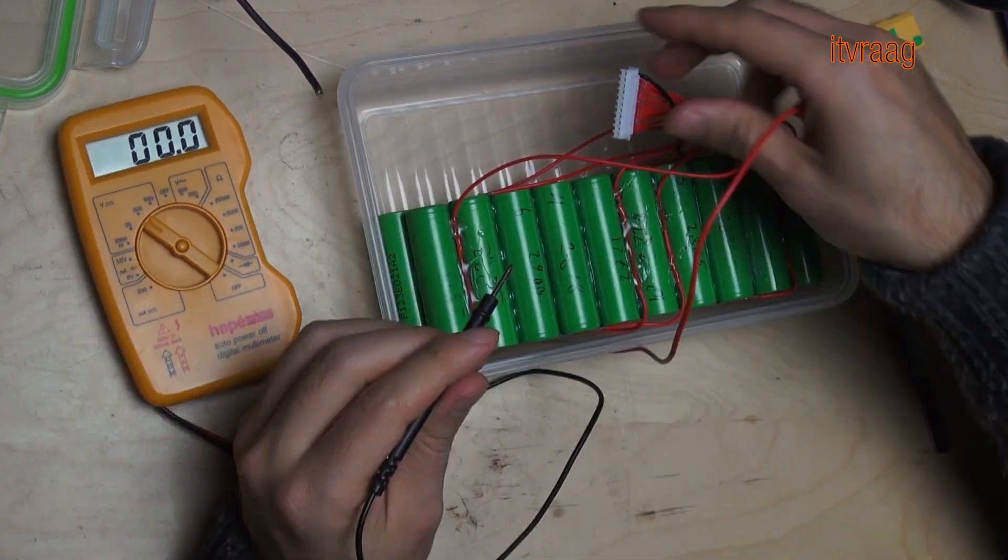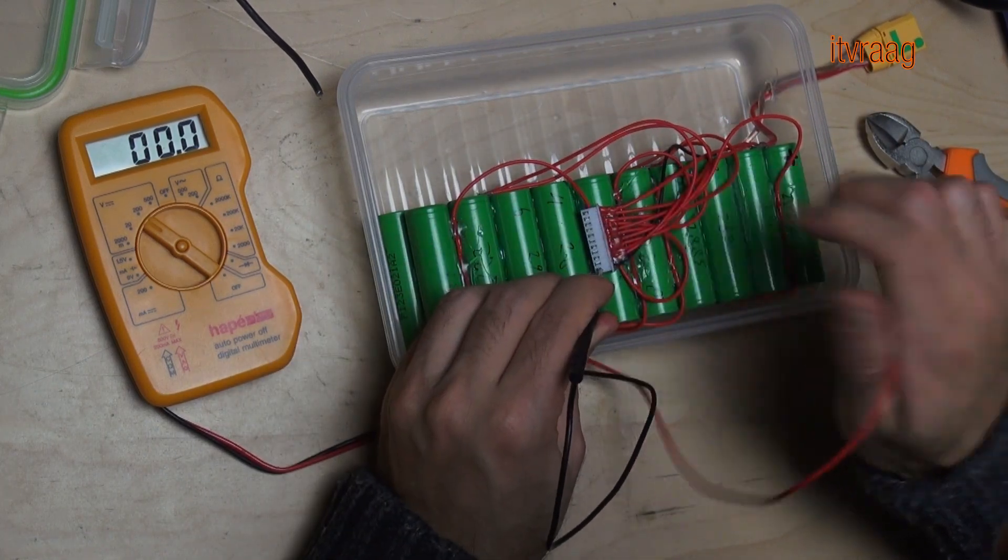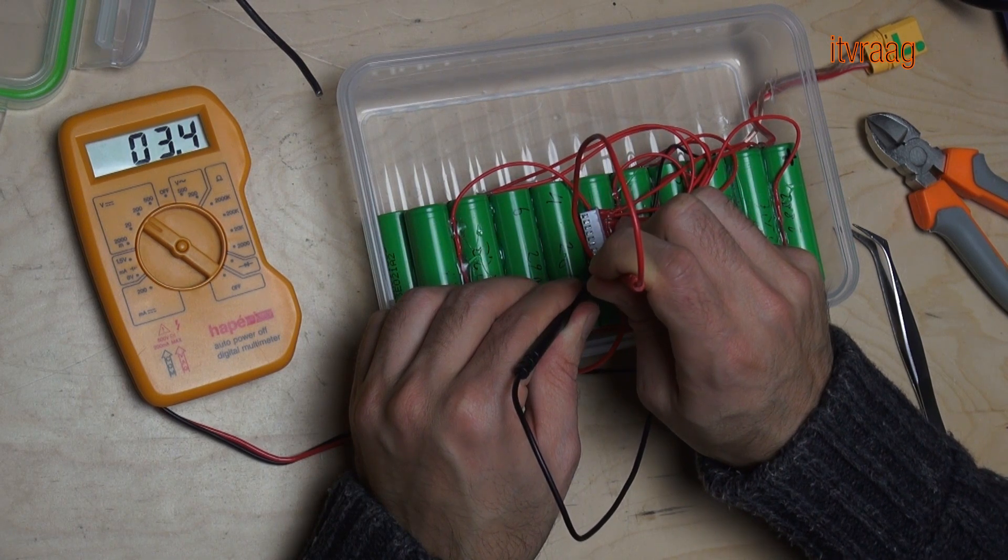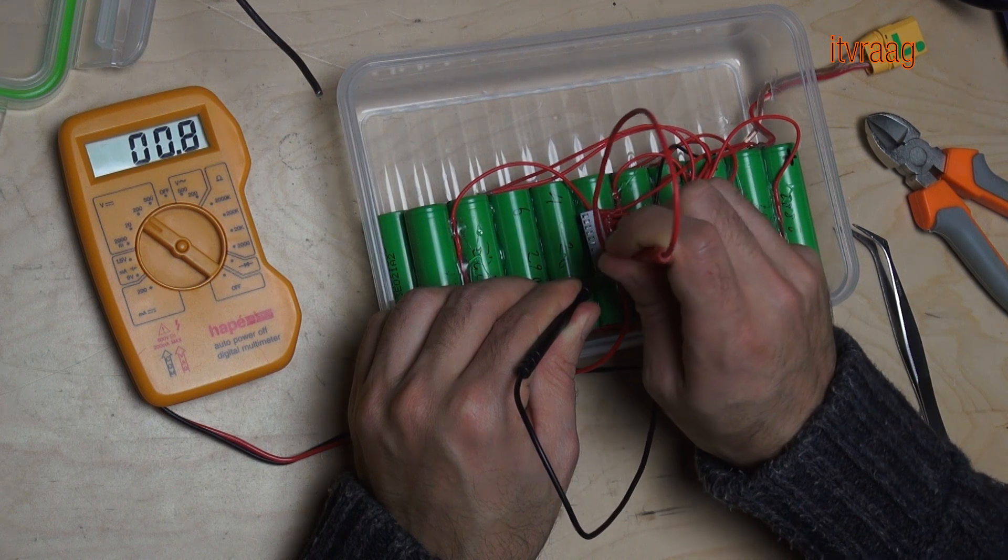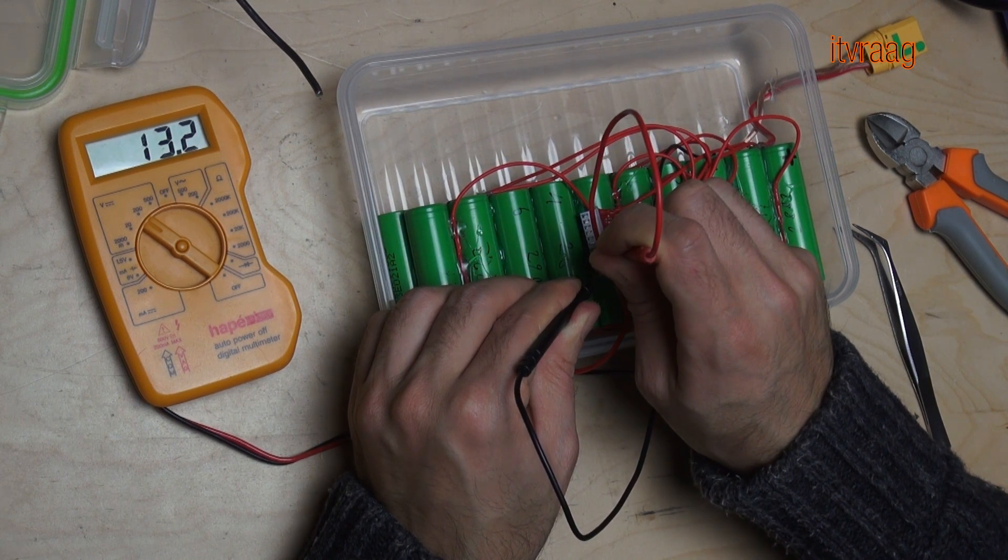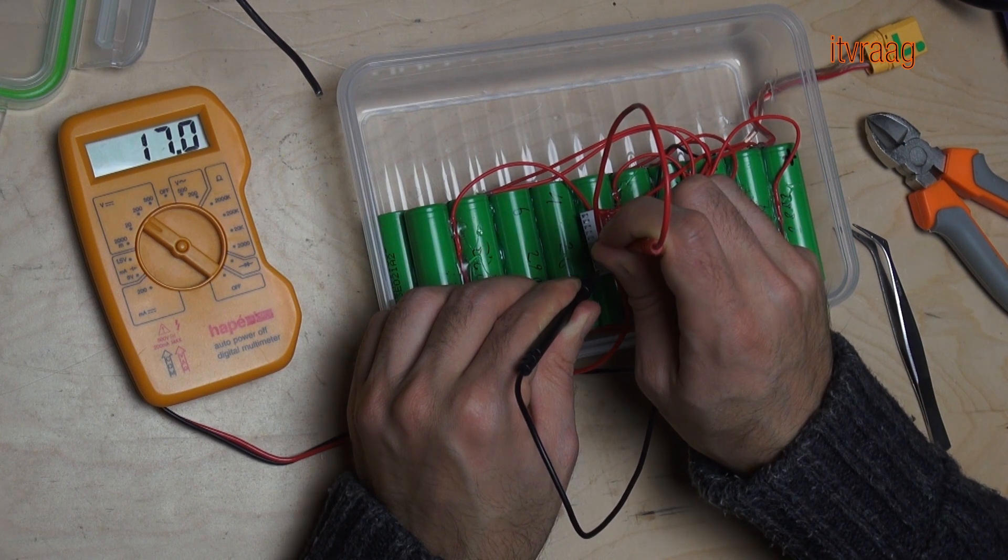You can test whether all the cables are connected correctly by measuring the lead cable with a voltmeter. Each step should add around 3 to 4 volts, depending on how much each cell is charged. By the way, when making the battery it's best to have all the cells at the same voltage. In my case I had just tested them and they were all discharged to around 3 volts.